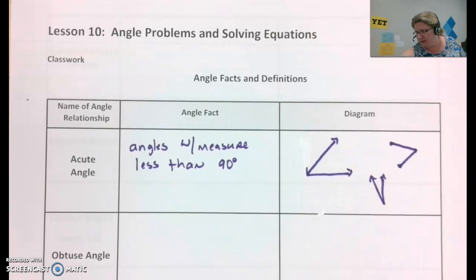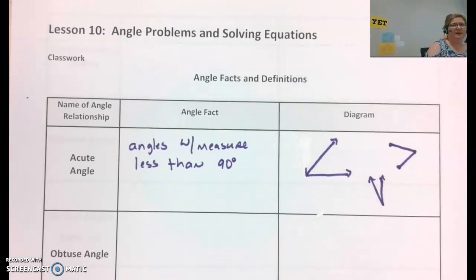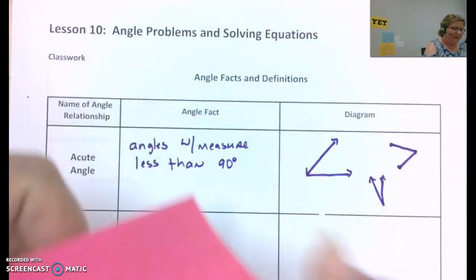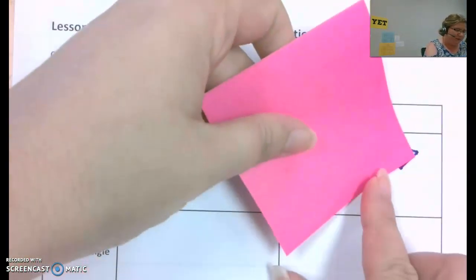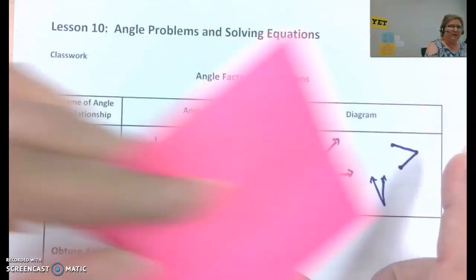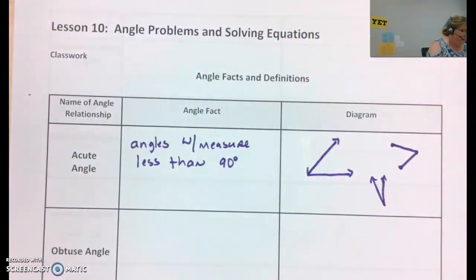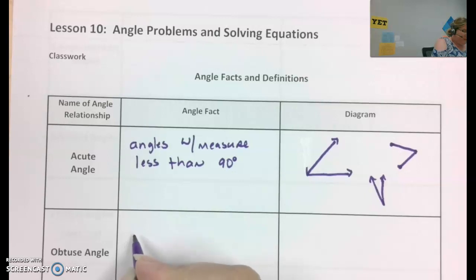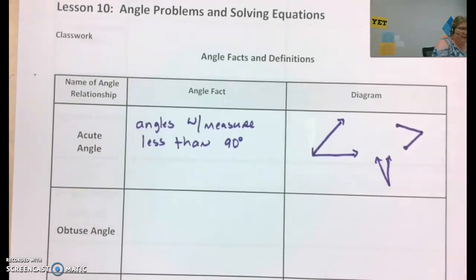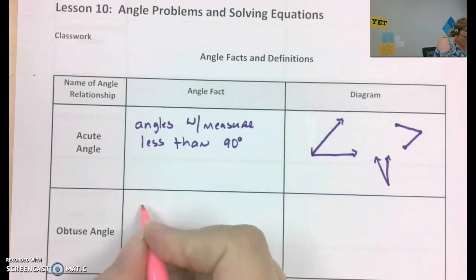It just has to be less than 90. And a good way to think about 90 is a 90 degree angle has a corner. So if I can take the corner of a piece of paper and cover it up, then it's not going to be a 90 degree angle. It's going to be less than that. So obtuse are kind of the opposite of acute angles. These are angles with measures greater than 90, but less than 180.